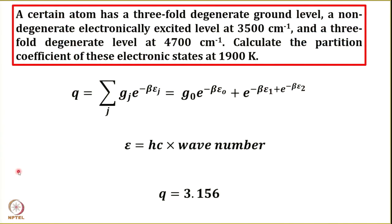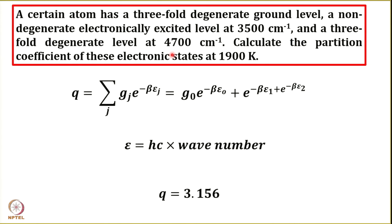Let us look at this problem. A certain atom has a threefold degenerate ground level, a non-degenerate electronically excited level at 3500 cm⁻¹, and a threefold degenerate level at 4700 cm⁻¹. The question is to calculate the partition function of these electronic states at 1900 Kelvin.